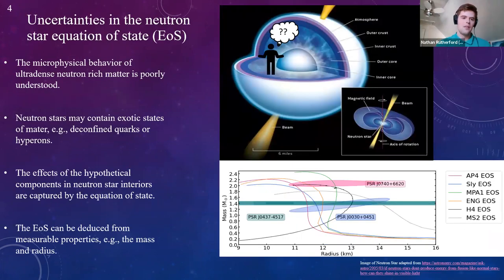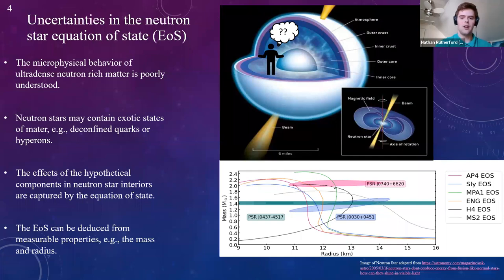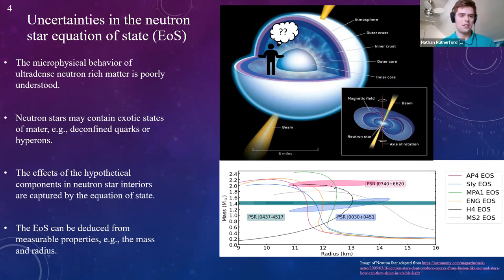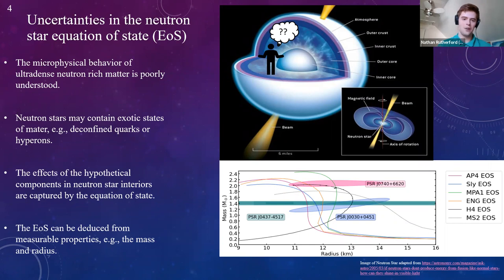How does all this relate to neutron stars? Dark matter can accumulate in these stars, and we don't quite understand the neutron star equation of state. The microphysical behavior of ultra-dense neutron-rich matter is really poorly understood, which allows neutron stars to potentially contain exotic states of matter, such as deconfined quarks or hyperons — baryons where at least one of the quarks is a strange quark.